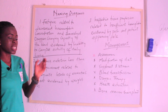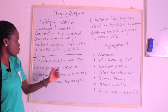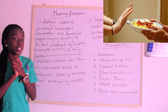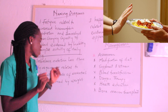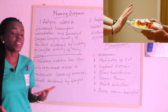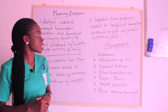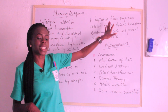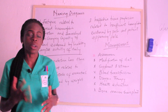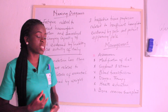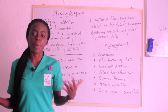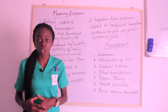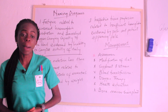Another nursing diagnosis for anemia is imbalanced nutrition less than body requirement, related to inadequate intake of essential nutrients, evidenced by weight loss. Another nursing diagnosis is ineffective tissue perfusion, which simply means the tissues are not getting enough oxygen. Ineffective tissue perfusion is related to insufficient hemoglobin, evidenced by pallor. There is also the possibility of other diagnoses such as deficient knowledge and anxiety, as the patient is anxious about their present condition.